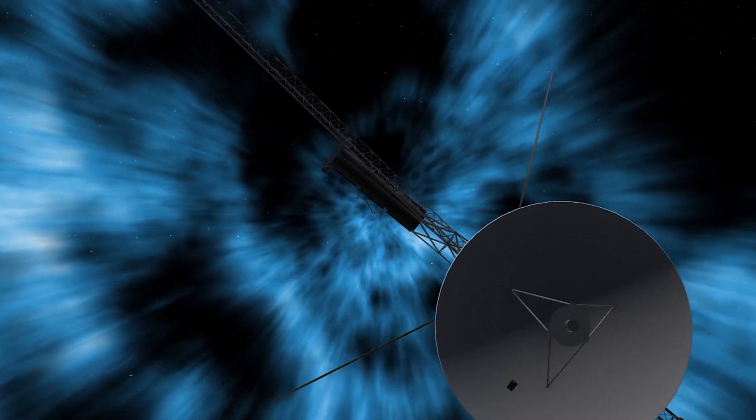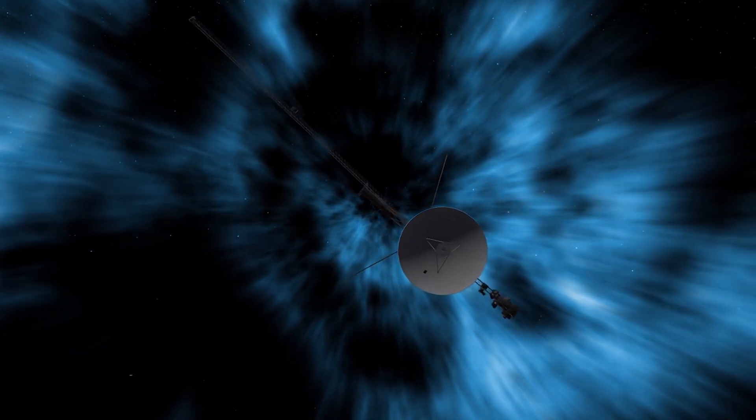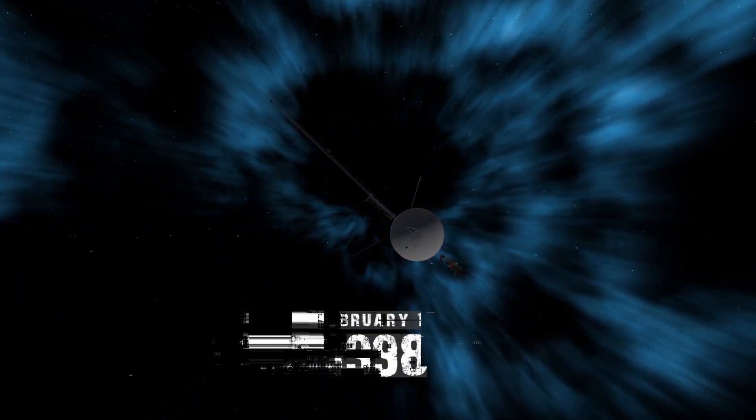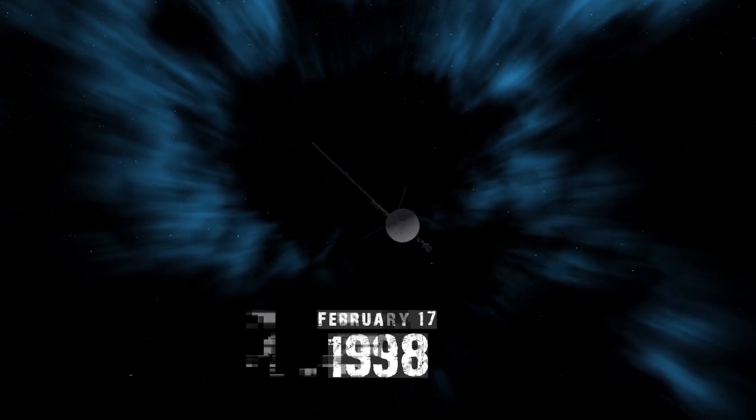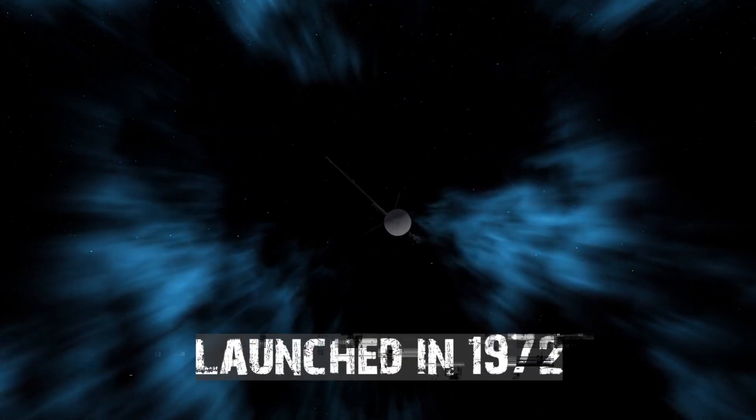Voyager 1 became the farthest distant human-made object in space on February 17, 1998, when it eclipsed Pioneer 10, launched in 1972.